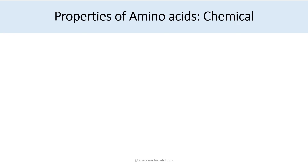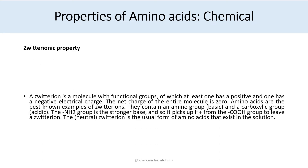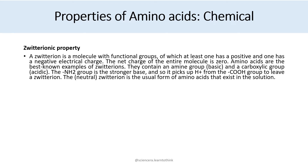Let's look at the chemical properties of amino acids. The first is the zwitterionic property. A zwitterion is a molecule with functional groups of which at least one has a positive and one has a negative electric charge. The net charge of the entire molecule is zero. Amino acids are the best known example of zwitterions.